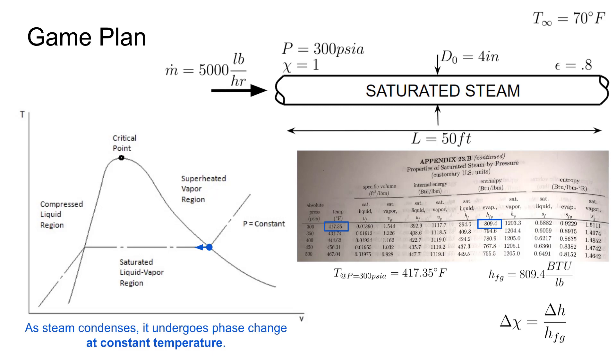So how are we actually going to quantify the decrease in quality? Well, if we can find out how much the enthalpy changes from where it enters the pipe to when it leaves, we can set up a ratio of that delta H compared to the 809.4 BTU per pound, which is the latent heat of vaporization for steam at 300 psi. Note in the steam table, the difference between HF, enthalpy for a saturated liquid, and HG, enthalpy for a saturated vapor, is HFG, the latent heat of vaporization. So delta H is how much heat is actually lost, and HFG is how much could be lost if the quality were driven all the way to zero. So we have HFG, but then to find delta H, we can use Q dot equals M dot delta H.